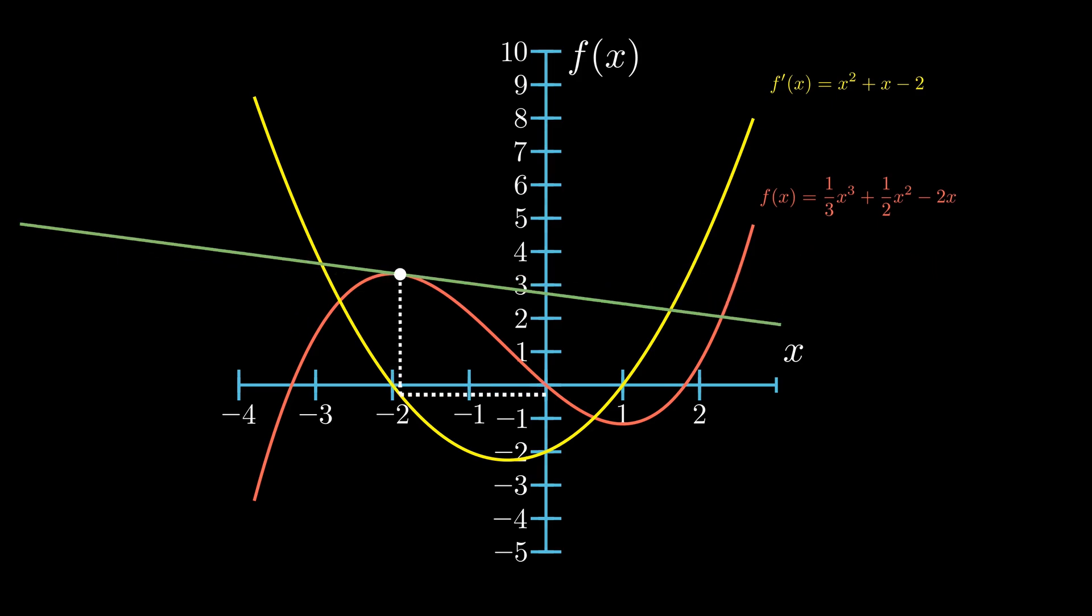Between the values of x being equal to negative 2 and x being equal to 1, we see the corresponding y values on our derivative function are negative. Simultaneously, our function illustrates a negative gradient.